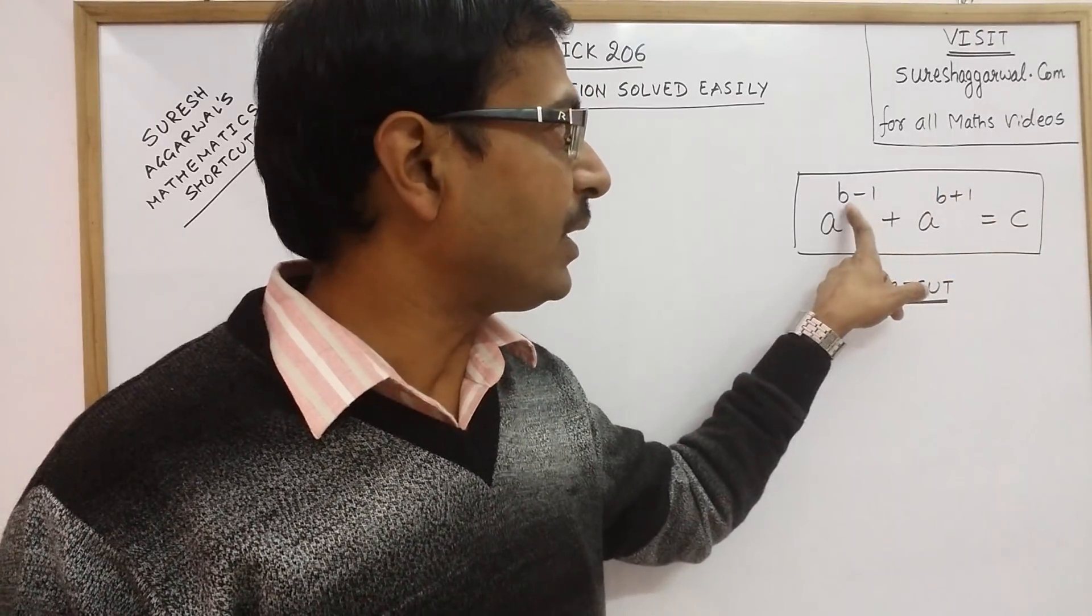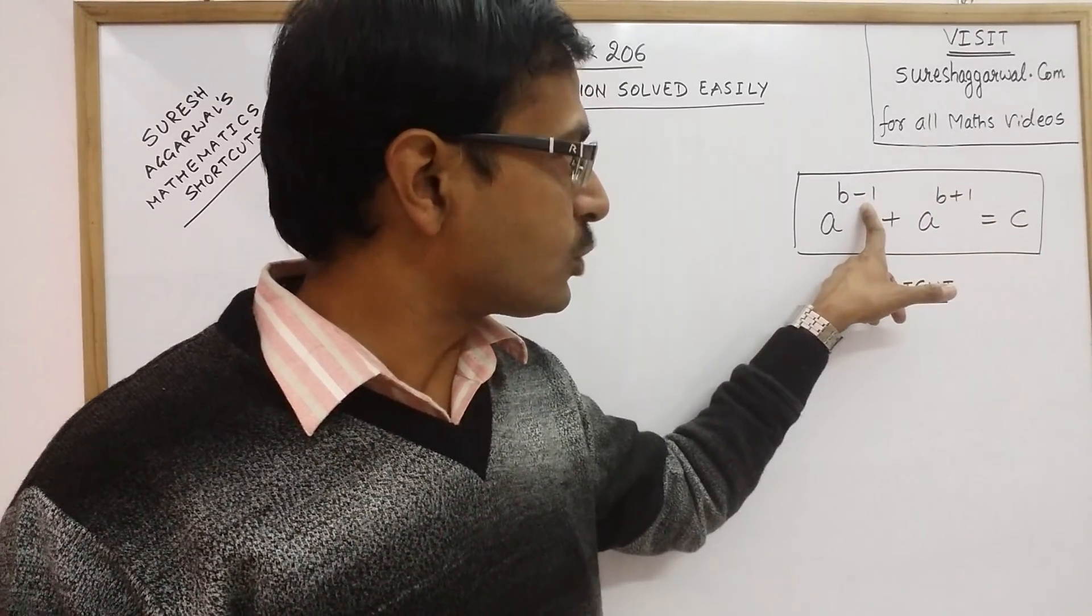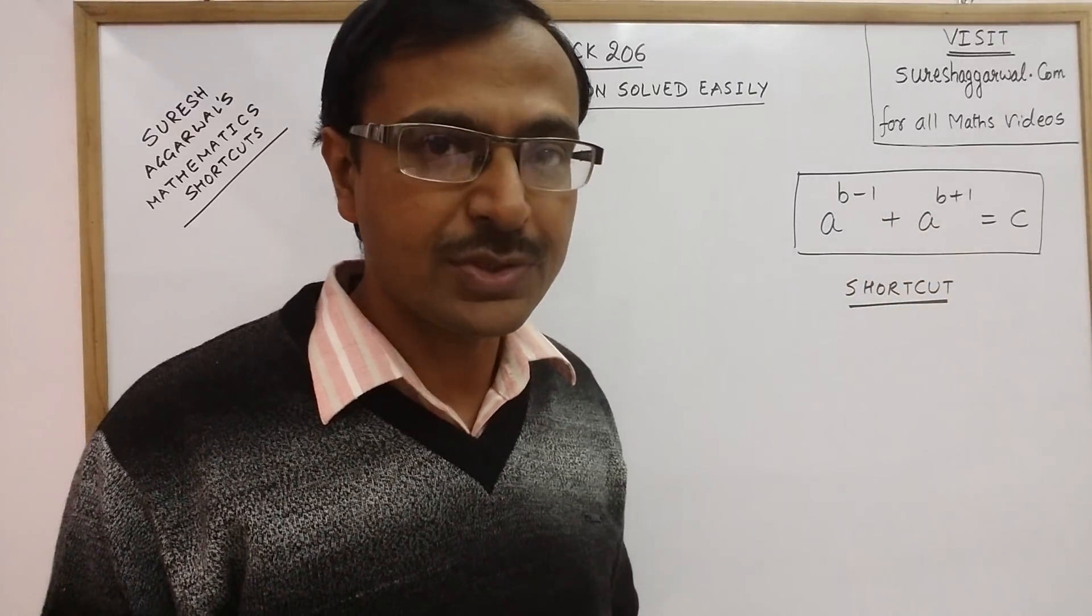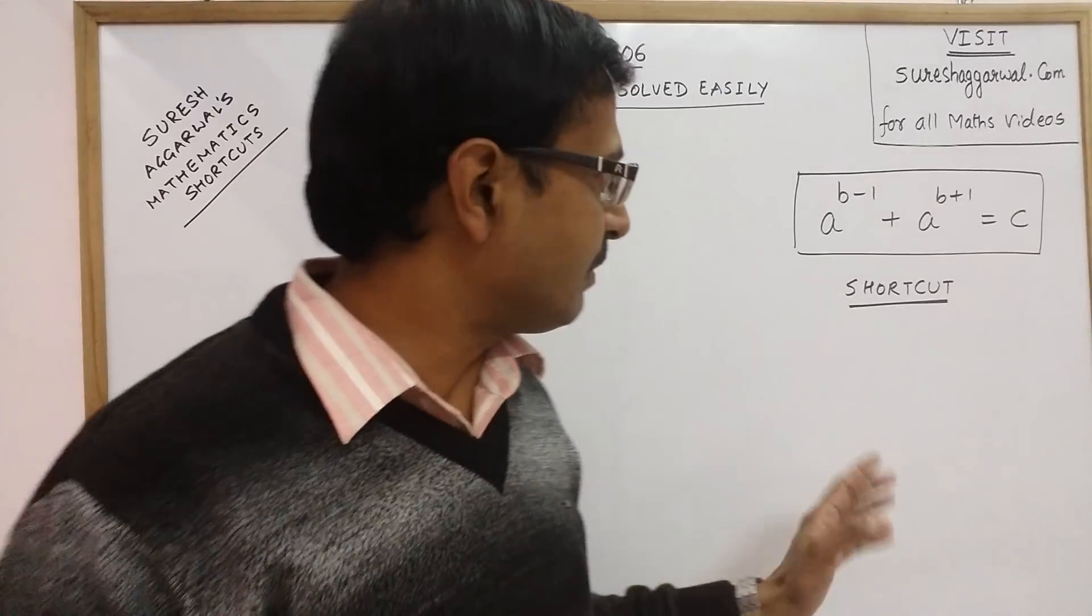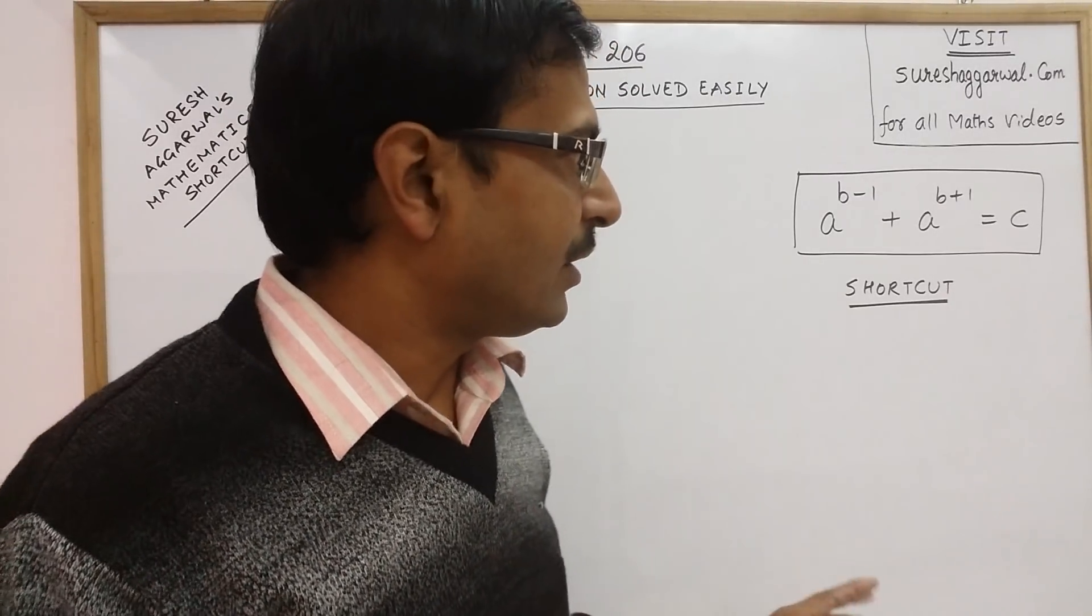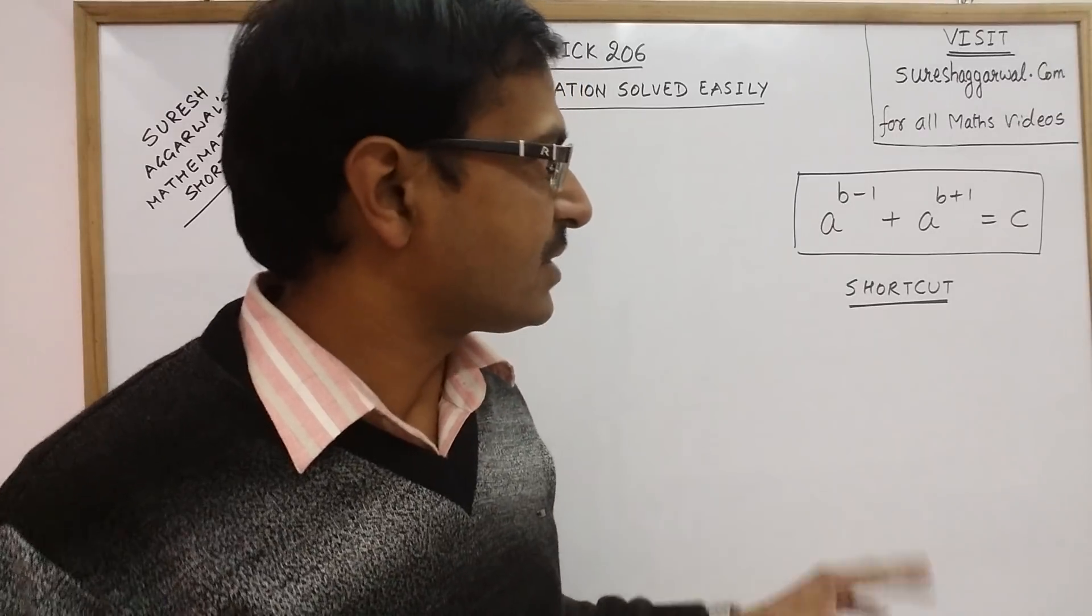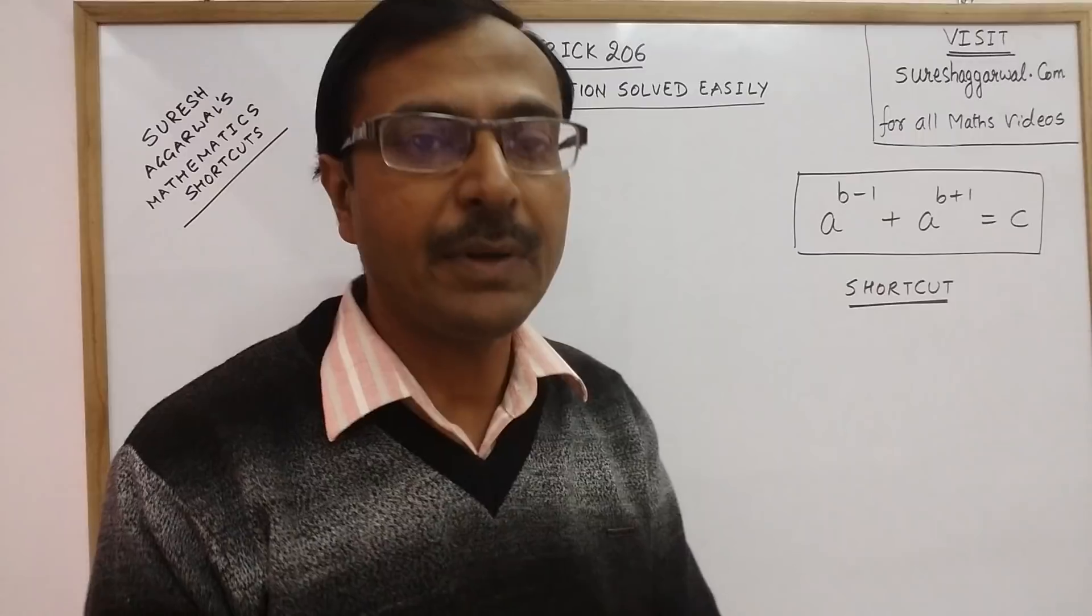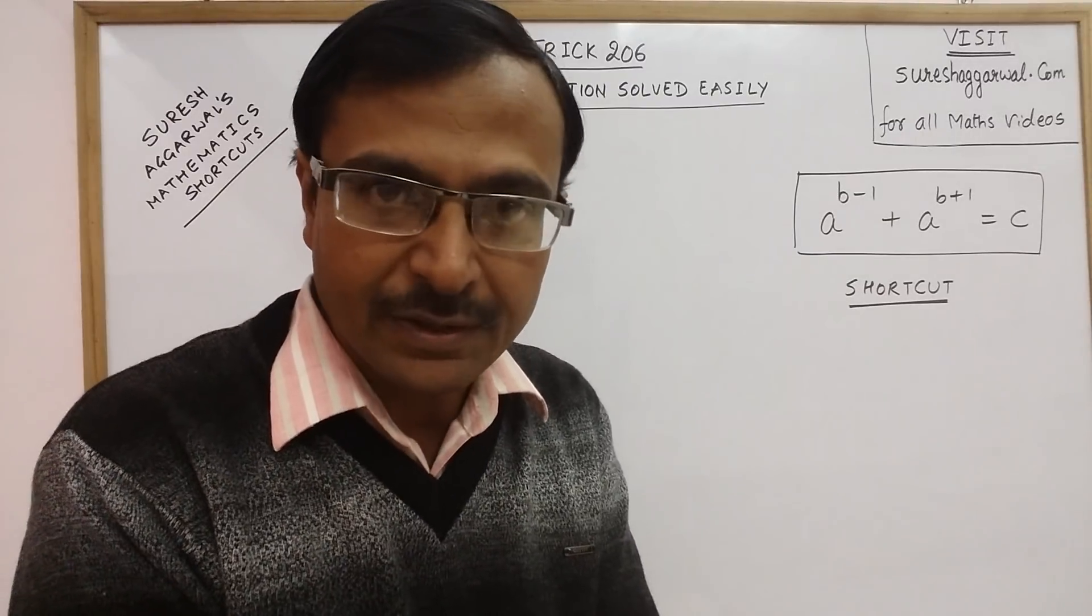So we have a common term b, reduced by 1 in the first term and increased by 1 in the second term. This is a very common question, very simple problem which are asked in competitive exams, in clerical grade exams, staff selection commission exams, banking exams and so on, wherever numerical aptitude exam is being conducted.